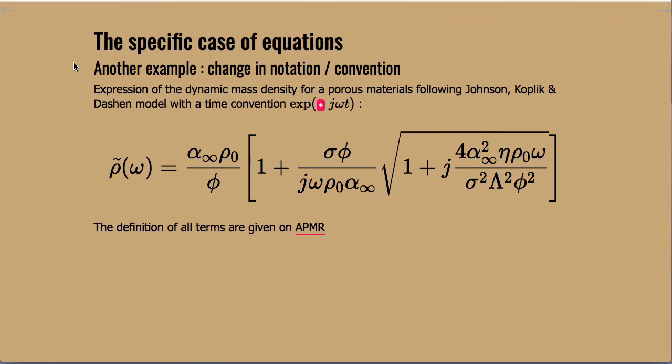Another point about the specific case of equations is that we can change notations or conventions of time. For example here is the expression of what we call the dynamic mass density for a porous material given by Johnson-Koplik-Dashen and you can switch between a time convention of plus j or minus j omega t.